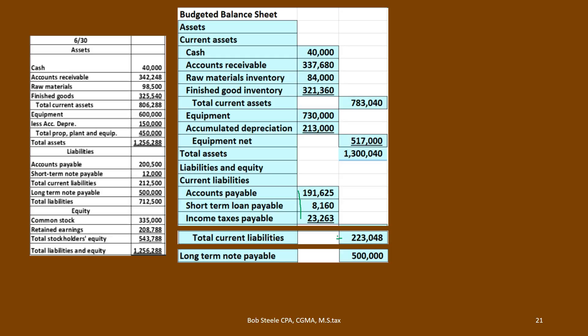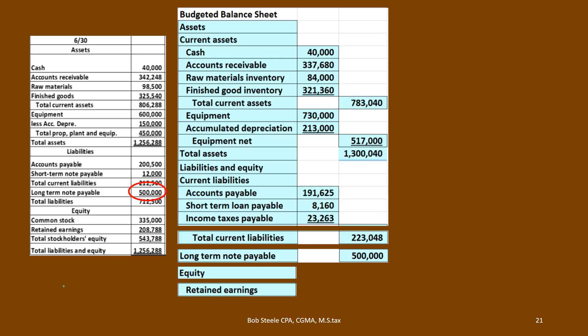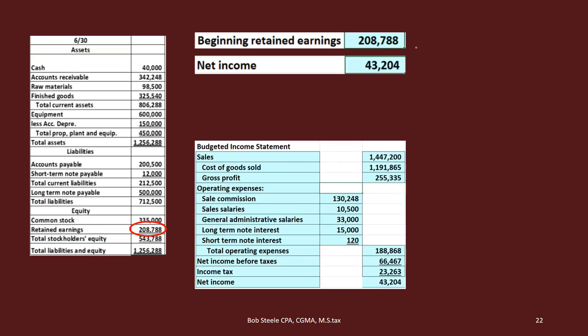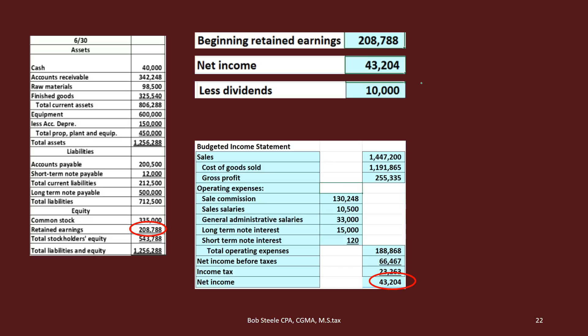Then we have the long-term note payable, which doesn't change. In this particular problem that was $500,000 at the beginning of the time frame — we're paying interest only during this quarter, so the principal does not go down and we're still at $500,000. Now we move to the equity section where we're going to have retained earnings. We'll do the calculation: beginning retained earnings from last period's balance sheet, plus net income from the income statement, minus dividends paid out. That $10,000 dividends figure is what we've budgeted to pay out.